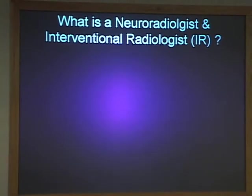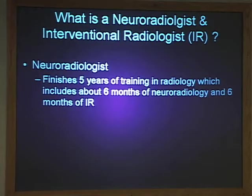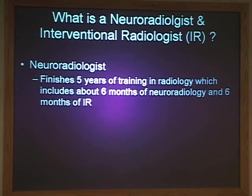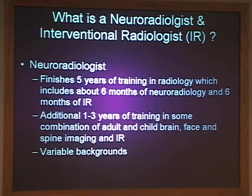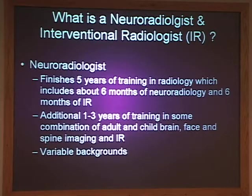So what is everybody? A neuroradiologist does five years of training — that's their general radiology — which includes at least six months of neuroradiology and about six months of IR. They then have an additional one to three years, depending on the institution, in a combination of adult and child brain, face, and spine imaging. The background is variable, so two different people could have two different backgrounds.